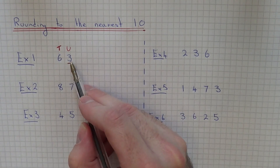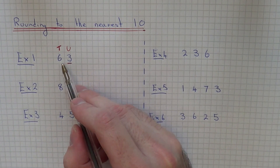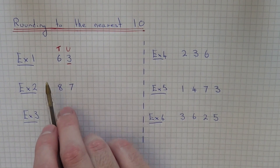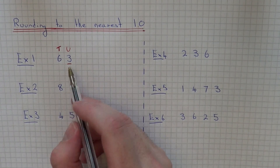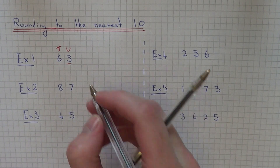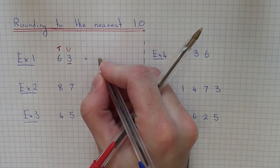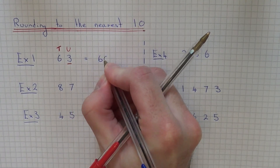If this number is five or bigger, you're going to round the number up, so it will be closer to seventy. In this case we've got a three, so we've got to round the number down to sixty.